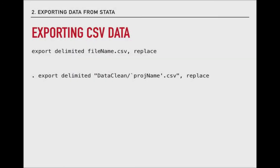The CSV file format is the export option included in the template we've given you. It involves a two-word command — export delimited — followed by specifying the file name, and then we use the replace option, which allows us to overwrite that file if it already exists. So if you're executing code over and over again, the replace option ensures that you don't get an error saying that filename.csv already exists in your data clean folder. That replace option is really important.